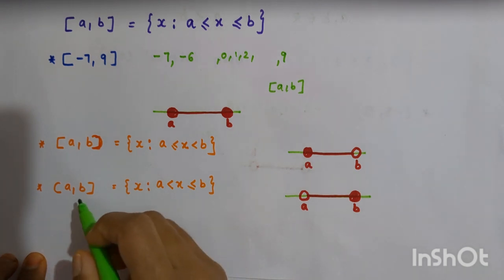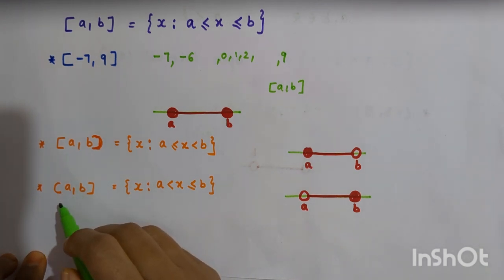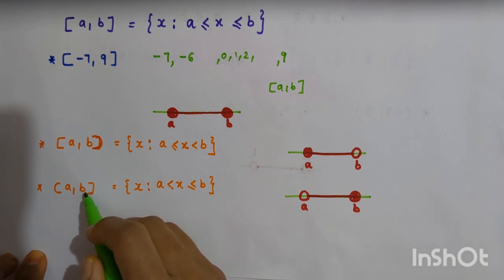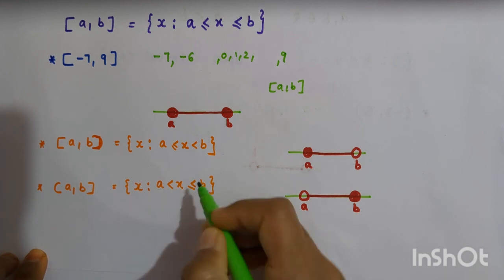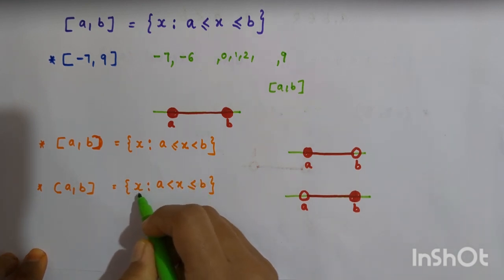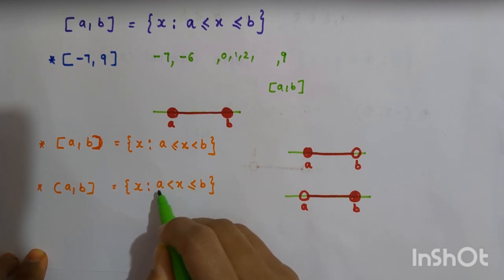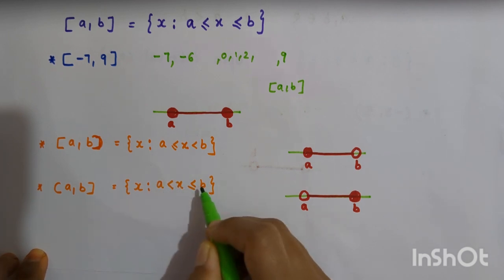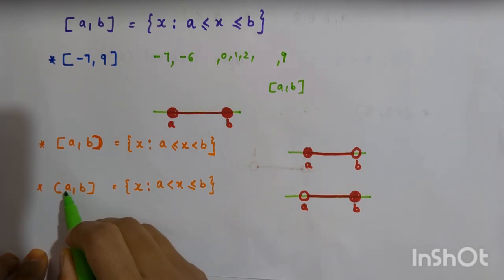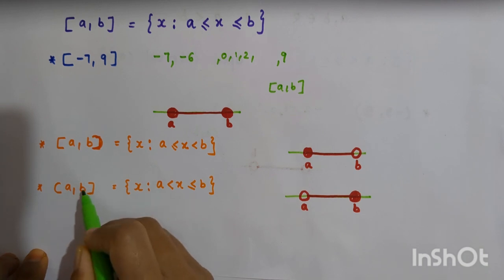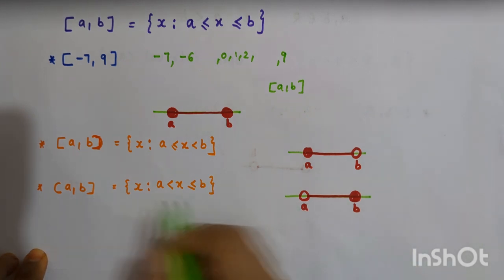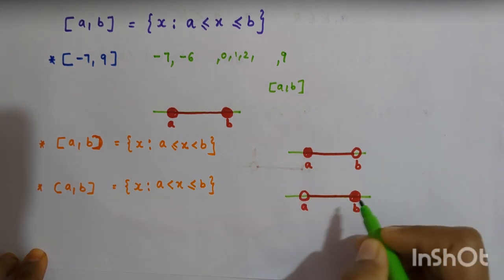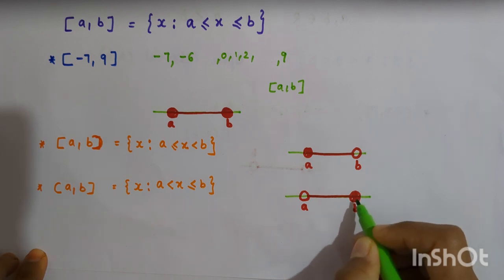We can also consider another interval which is open at the left end and closed at the right end. It is defined as the set of all x such that a < x ≤ b. The elements must be greater than a — not including a — and less than or equal to b, including b. So it is an interval from a to b including b but excluding a. On a real number line, a is not included but b is included and shaded.